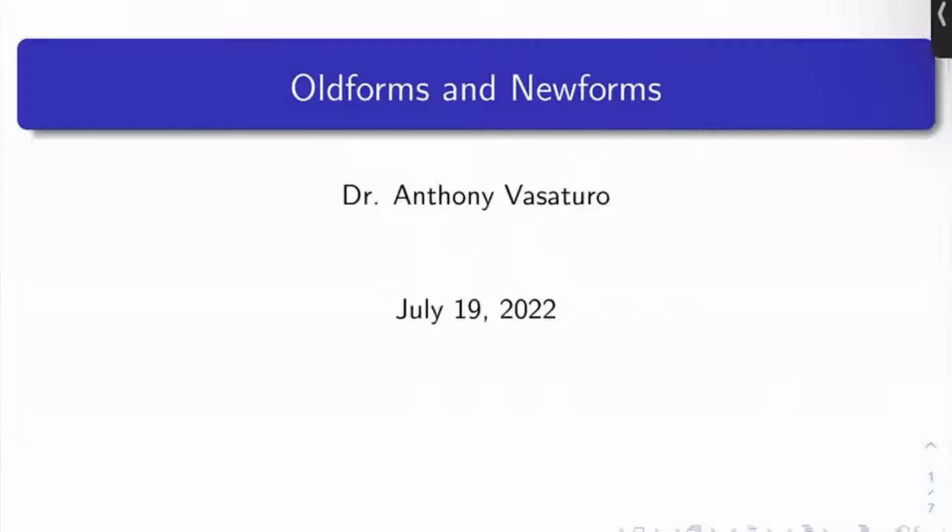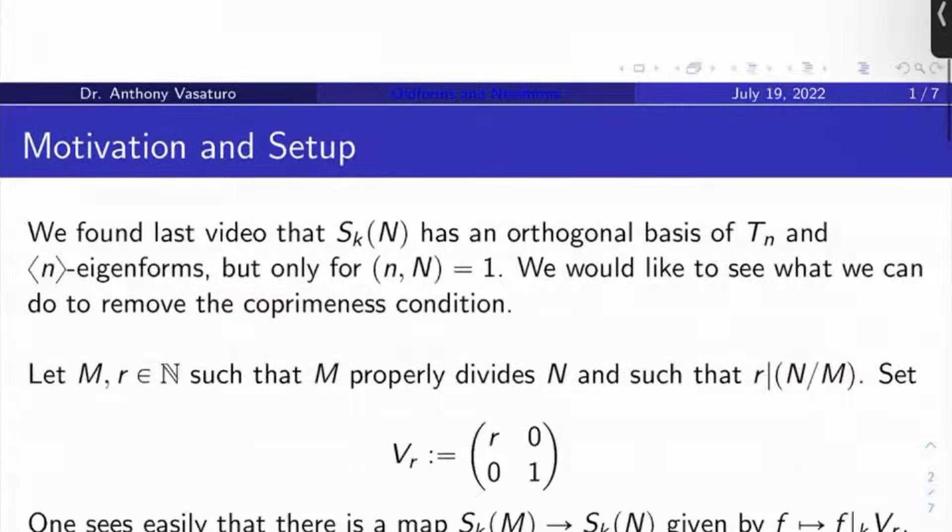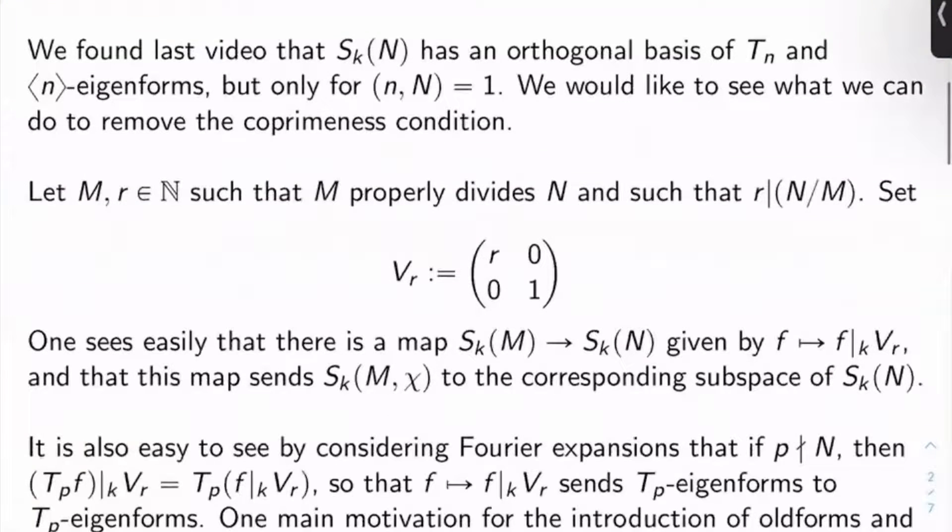Welcome back to the next video, everybody. Today is all about old forms and new forms, so motivation and setup. Last video, we found that S_K(N) had an orthogonal basis of simultaneous T_N and diamond of N eigenforms, but only if little n and big N were coprime. So we'd like to see what we can do to remove this coprimeness condition.